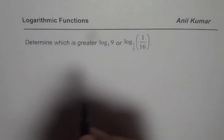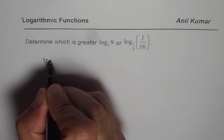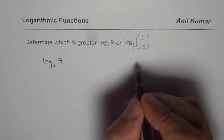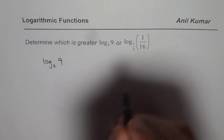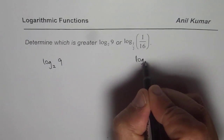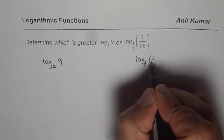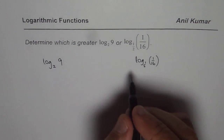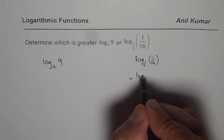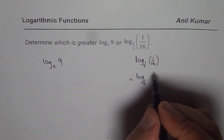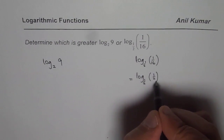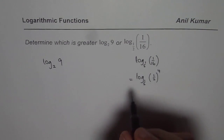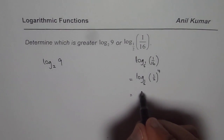To figure that out, we can try to estimate log base 2 of 9 and log base one-half of 1 over 16. The second one seems simpler, so let's start there. We can write it as log base one-half of one-half to the power of 4, which equals 1 over 16. So that gives us a value of 4.